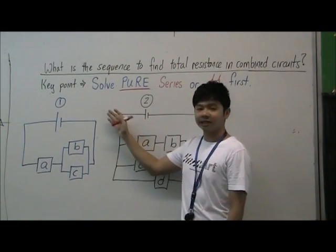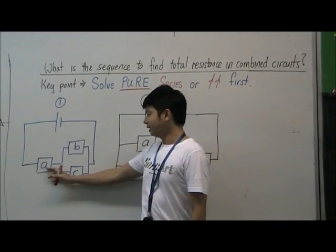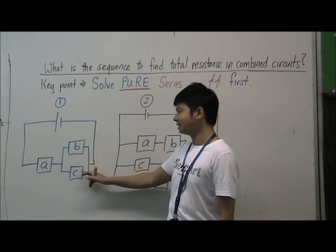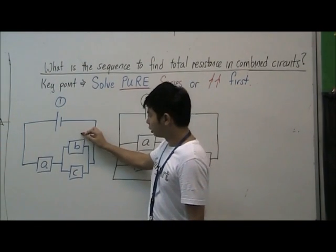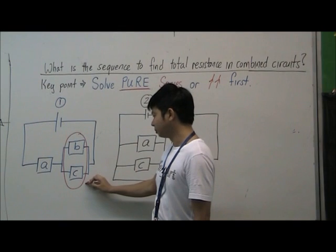We look at circuit diagram 1. In circuit diagram 1, we have resistor A that is in series with a parallel branch of resistors B and C. We see that B and C are in pure parallel, so we do this first. This will be our step one.